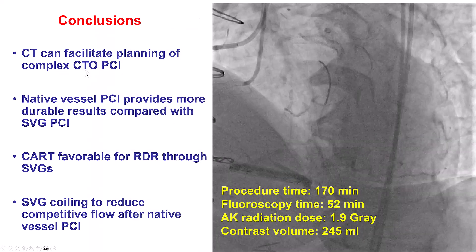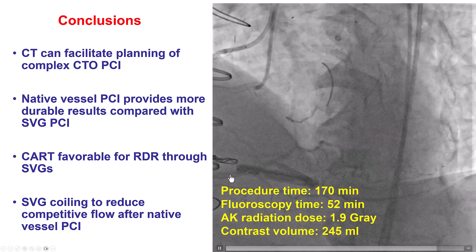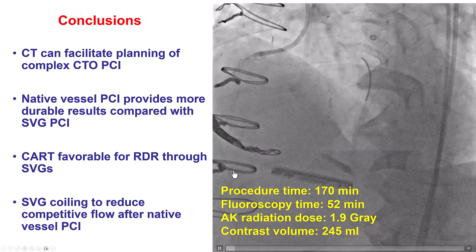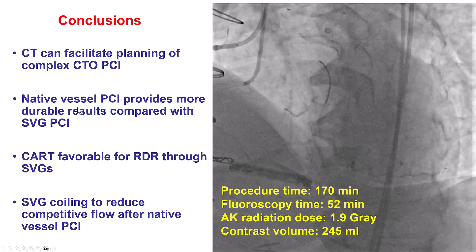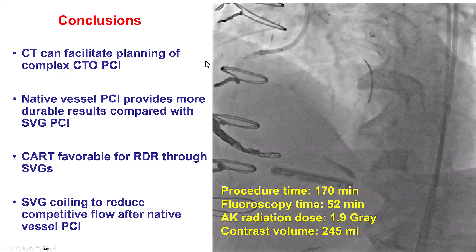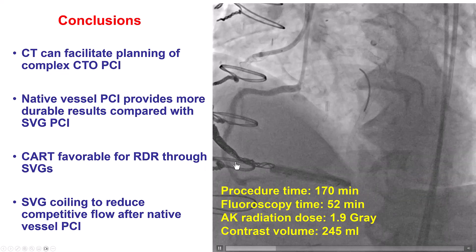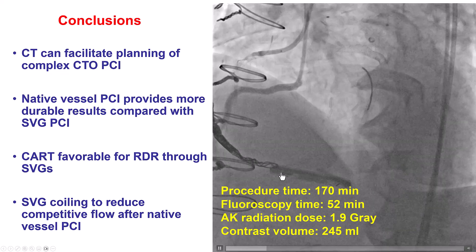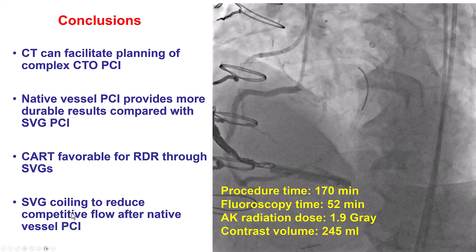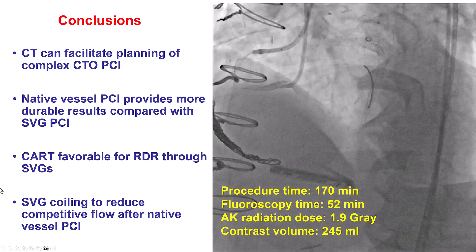Multiple lessons from this case. First, CT can help facilitate planning of CTO and complex PCI — in this case it helped clarify the proximal cap location, lesion length, the bifurcation at the distal cap, and the presence of calcium both in the proximal cap and within the occlusion. Second, when you have recurrent saphenous vein graft failure, treating the native vessel provides a more durable solution because of the high rates of recurrent SVG failure. Third, the key point is the use of the CART technique: when going retrograde through a saphenous vein graft, it is usually quite easy to advance a retrograde balloon. The retrograde balloon is inflated, creating a target for the antegrade wire — this is the CART technique that was successful in this case. Finally, coiling the vein graft is something we often do when there is brisk competitive flow; there is relatively limited data, but it might reduce the potential risk of stent thrombosis due to competitive flow.